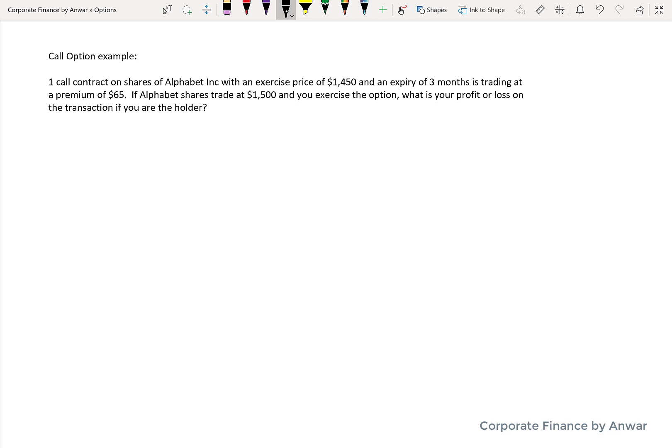The exercise price basically means that if you are the holder, you're going to be buying at that price. The three months is when it expires, and the premium is the cost that you pay. The Alphabet shares are trading at $1,500 and you exercise the option. What's your profit and loss on the transaction?